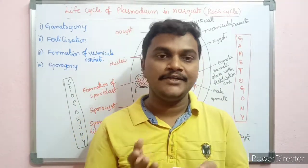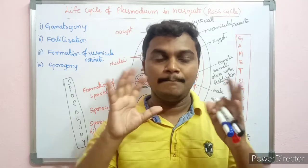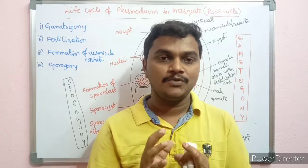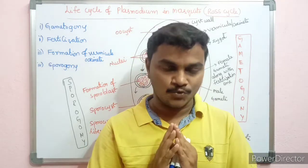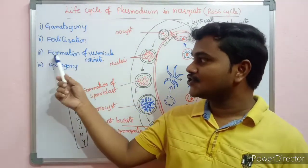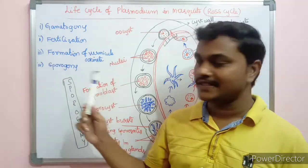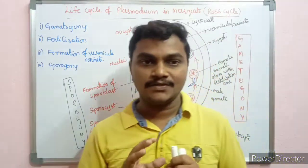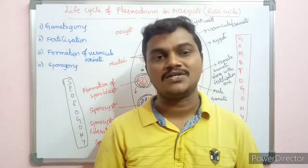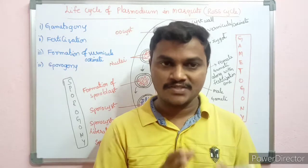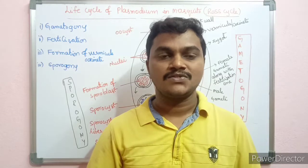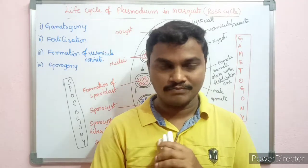The complete life cycle in the mosquito takes about 10 to 24 days, after which the first developed infective sporozoites are ready. The two main phases are gametogeny and sporogony. These phases — gametogeny, fertilization, formation of vermicule or ookinete, and sporogony — complete the mosquito cycle. Once the mosquito bites human beings, the human cycle begins, including the hepatic stage, erythrocytic stage, and exo-erythrocytic stage. This concludes the life cycle of Plasmodium in mosquito. Thank you for watching.